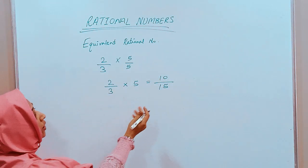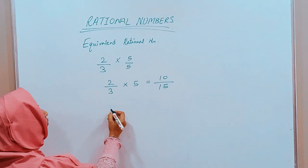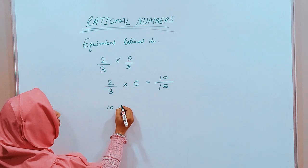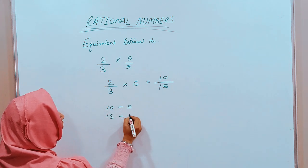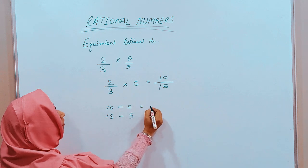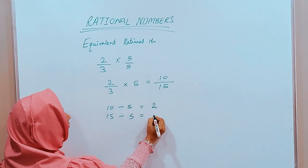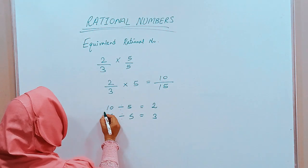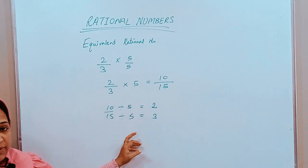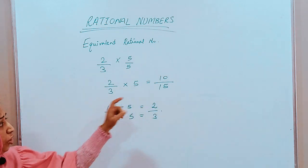When we reduce 10 upon 15 to its simplest form, now we know that 10 is divisible by 5, 15 is also divisible by 5. 10 divided by 5 is 2 and 15 divided by 5 is 3. That is 2 upon 3 again. So if we divide 10 upon 15 by 5, we will again get 2 by 3 which is the original number.